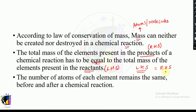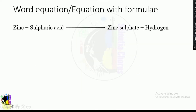Both the left hand side and the right hand side should have an equal number of atoms. The number of atoms of each element remains the same before and after a chemical reaction — that is what we call balancing a chemical equation. If we have an unbalanced equation, we need to balance it by adjusting the number of atoms.